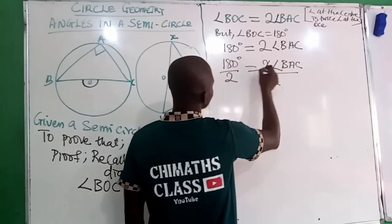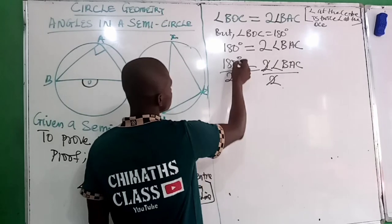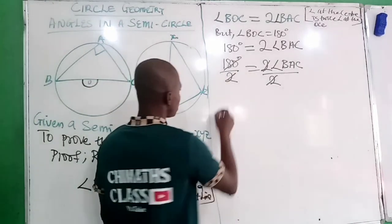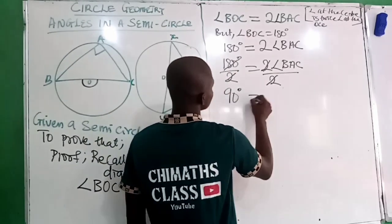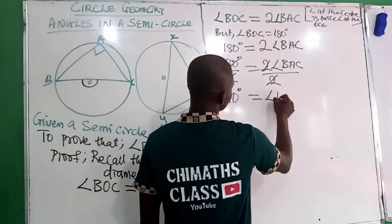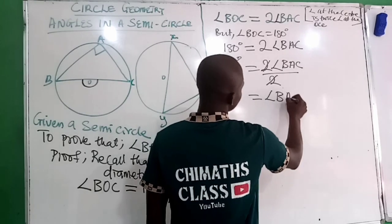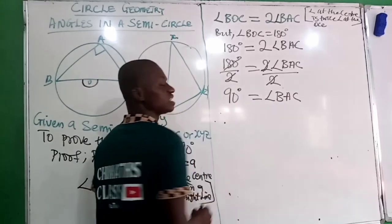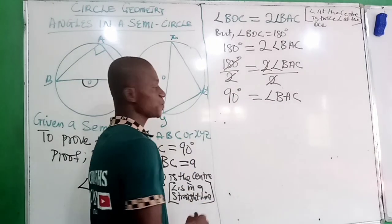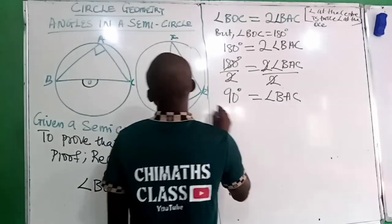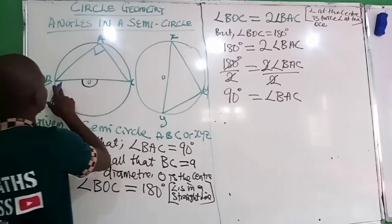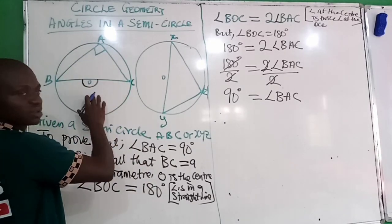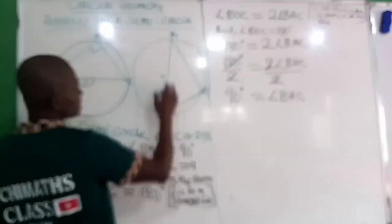The twos cancel and 180 divided by two gives us 90 degrees, which is equal to angle BAC. So we have now proven that the angle suspended on the semicircle is 90 degrees.